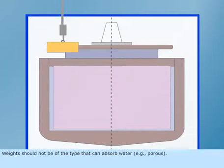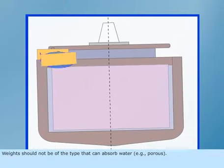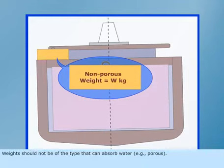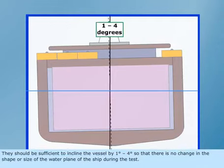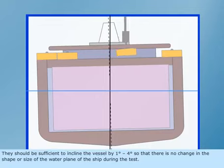Weights should not be of the type that can absorb water, for example porous. They should be sufficient to incline the vessel by 1 degree to 4 degrees so that there is no change in the shape or size of the water plane of the ship during the test.